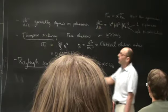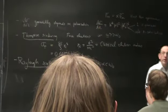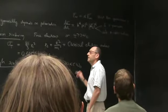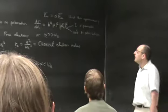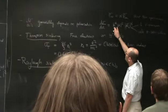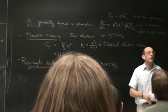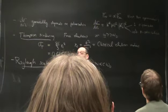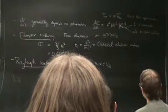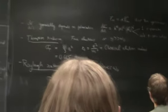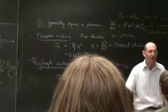Very important is Rayleigh scattering, where we're looking at scattering off of bound electrons at frequencies small compared to the binding energy. In that case, the polarizability is essentially constant, and the scattering cross-section has an extremely strong frequency dependence — it scales like the fourth power of the frequency, as long as that frequency is small compared to omega-naught. We discussed why the sky is blue.